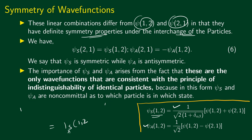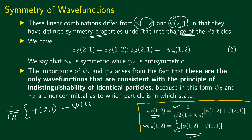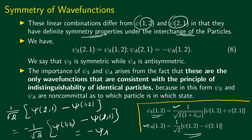If we look at ψ_A(1,2) and interchange particles 1 and 2, this wave function becomes (1/√2)[ψ(2,1) − ψ(1,2)]. Pulling out the minus sign gives −(1/√2)[ψ(1,2) − ψ(2,1)] = −ψ_A(1,2). So the wave function picks up an extra minus sign under interchange of the two particles. We say that this wave function is antisymmetric.